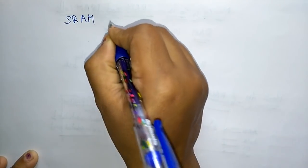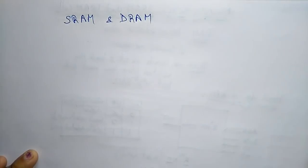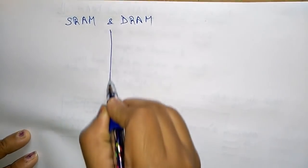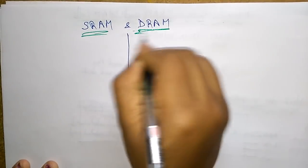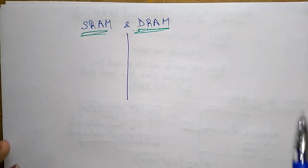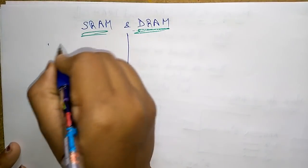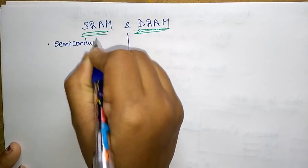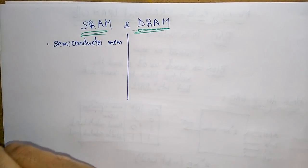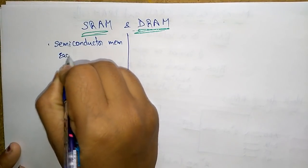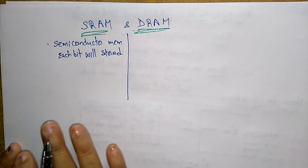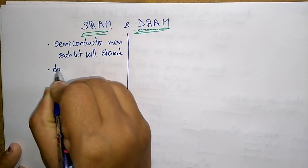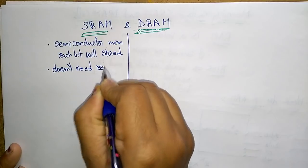Let us see the different types of RAM: SRAM and DRAM. SRAM is Static RAM and DRAM is Dynamic RAM. SRAM is a type of semiconductor memory used to store each bit of data.